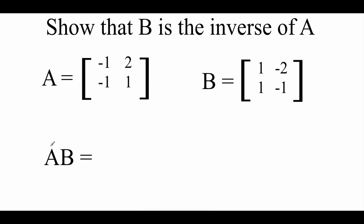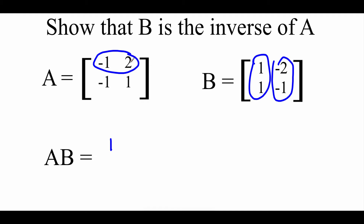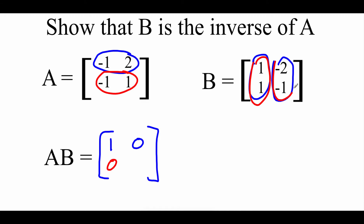First we're going to take matrix A times matrix B using row-by-column multiplication. First row times first column: negative 1 times 1 is negative 1, and 2 times 1 is 2 — adding those gives 1. First row times second column: negative 1 times negative 2 is 2, and we get negative 2, so 2 plus negative 2 is 0. That's our new first row. Second row times first column: negative 1 times 1 is negative 1, add 1, we get 0. Second row times second column: negative 1 times negative 2 is positive 2, add negative 1, we get 1. So A times B gave us an identity matrix.